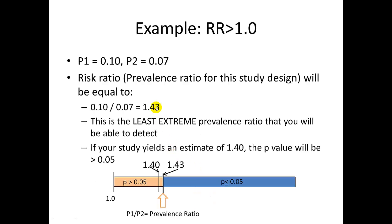Let's look at it the other way. If our exposure was a risk factor, the prevalence ratio estimate would be greater than 1. Let's look at an example. Let's flip P1 and P2 and have the estimate be 1.43, which is the inverse of 0.7. This is the least extreme prevalence ratio that you would be able to detect in your study. Anything smaller than that would have a p value of greater than 0.05. For example, if your study yielded an estimate of 1.4, just a bit closer to 1, the p value would be greater than 0.05 and the estimate would not be statistically significant.